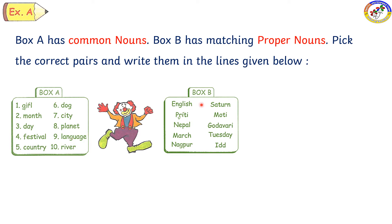And box B: English, Priti, Nepal, March, Nagpur, Saturn, Moti, Godavari, Tuesday and Eid.